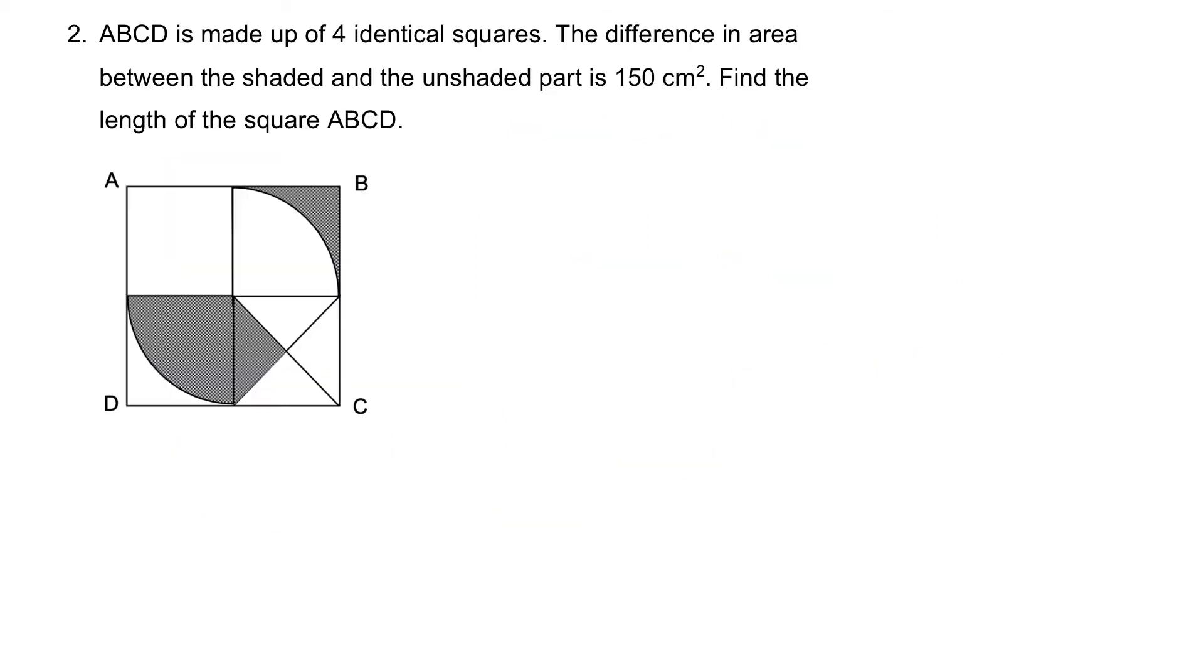Next question. Question 2. The figure ABCD is made up of 4 identical squares. So we have 1, 2, 3, and 4. The difference in area between the shaded and the unshaded part is 150cm². Find the length of the square ABCD. So this is what we are trying to find the length.